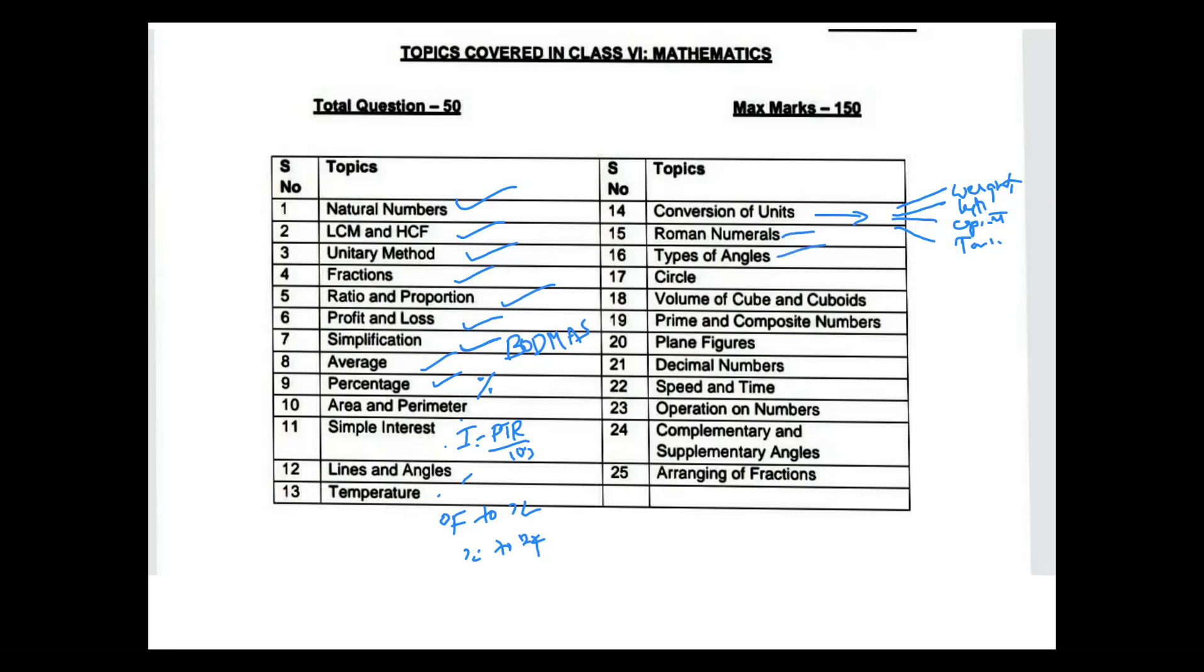Roman numerals, types of angles. We have so many angles: acute, obtuse, right angle, complementary, complete angle, reflex angle. Circles - you need to know the formulas of circles, areas and circumference. Volume of cube and cuboids - you have to cover volume formulas and surface areas. For the cuboid, surface area of the four walls is very important. Prime and composite numbers - you have to go up to 150 prime and composite.